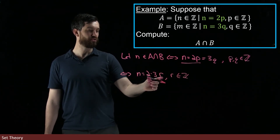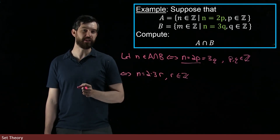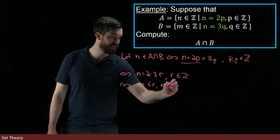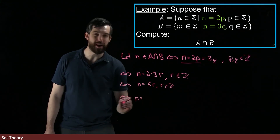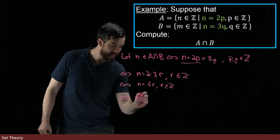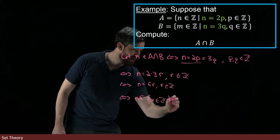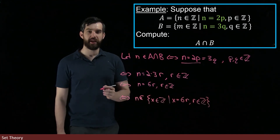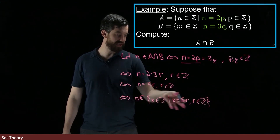Indeed, if n equals 2 times 3 times r, you can split it into those two cases, and if you have them split up you can put them back together like this — so this is an if and only if. This is the same thing as saying n equals 6r for r inside the integers. Therefore I can finish by saying n is an element of the set of all integers x such that x equals 6r for some integer r. So A intersect B is equivalent to this set — the multiples of 6.